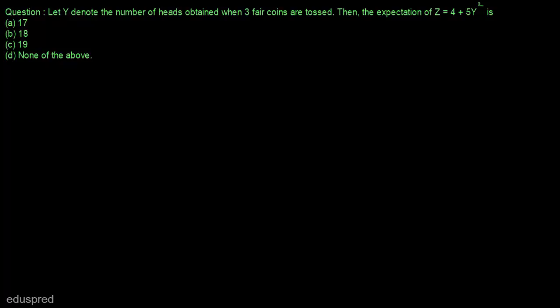Given the information, we can say that Y will follow a binomial distribution. A binomial distribution has two parameters, N and P. In this question, we are tossing three fair coins, so N is equal to 3. P is the probability of success — the probability that a head will occur — and because the coins are fair, P is equal to 0.5.